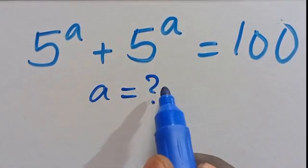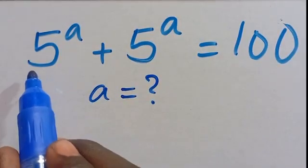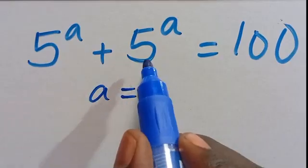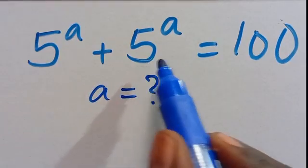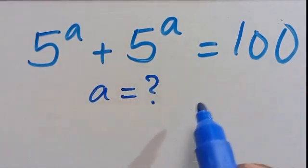Hi! What is the value of A, given that 5 to the power of A plus 5 to the power of A equals 100?